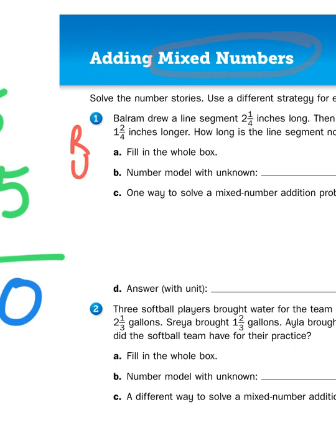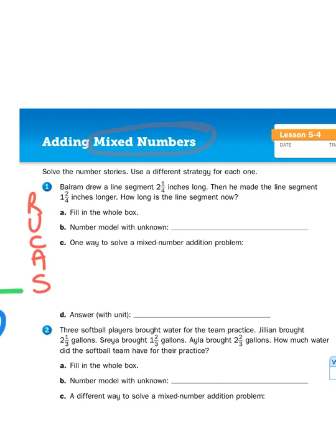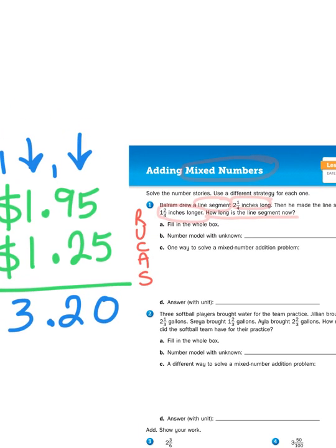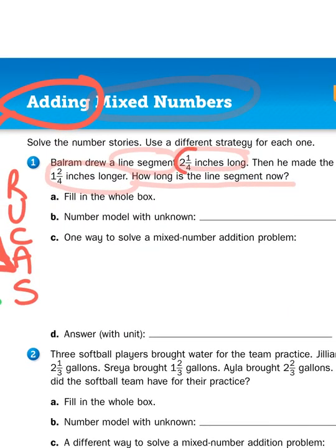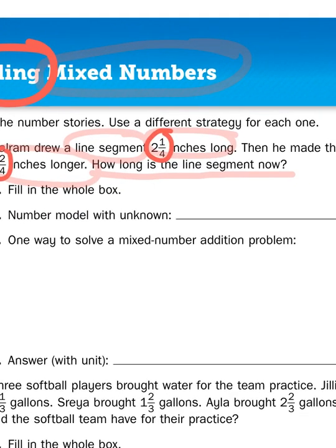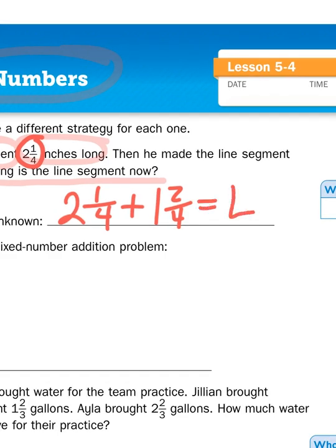When I quickly run through the RUCKUS strategy of rereading the problem, underlining the question, circling the important information, and coming up with an action plan, I learned that Balram drew a line segment that was 2 1/4 inches long, and then he made his line segment 1 2/4 inches longer. Now, my action plan is no mystery here, because the title of our lesson here is adding. So, I'm probably going to have to add. So, what is my addition problem? Well, I'm going to add 2 1/4 and 1 2/4. So, 2 1/4 plus 1 2/4 equals an unknown. Let's say L for line segment.